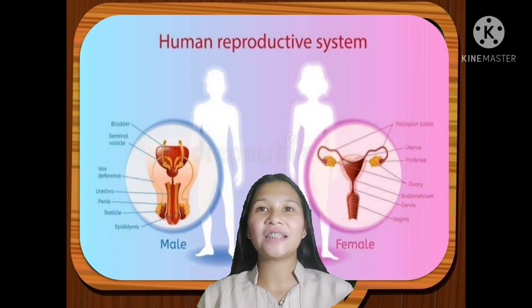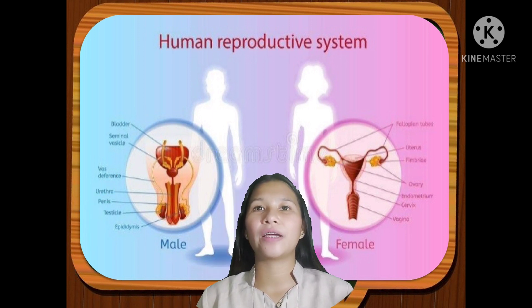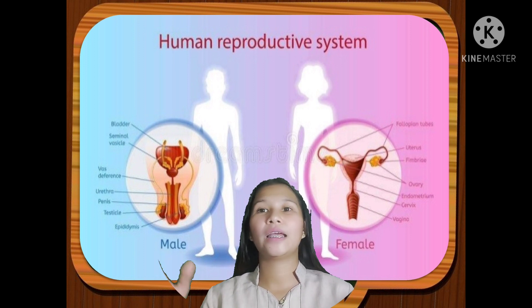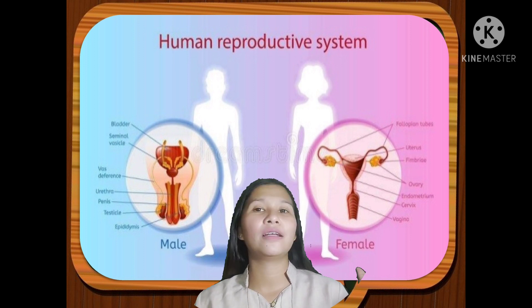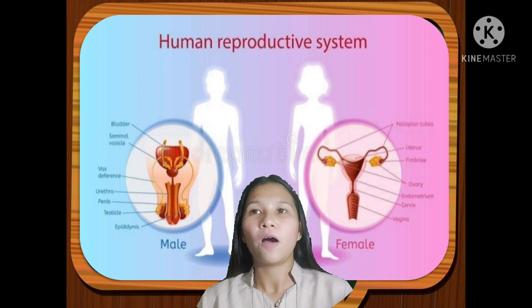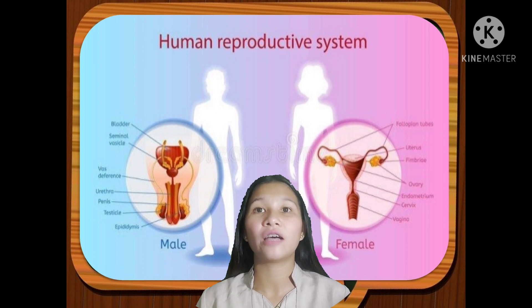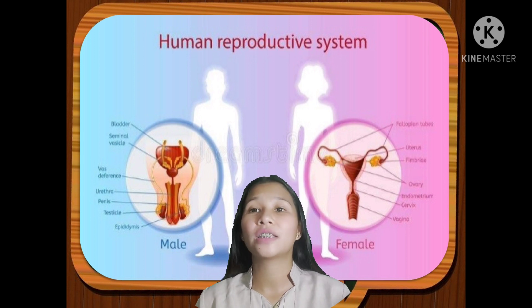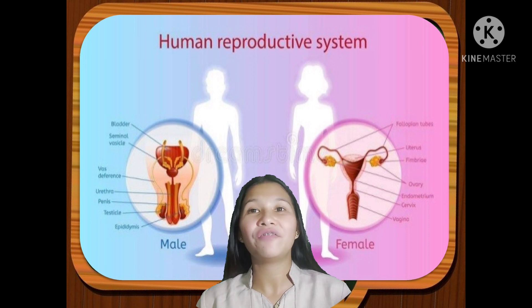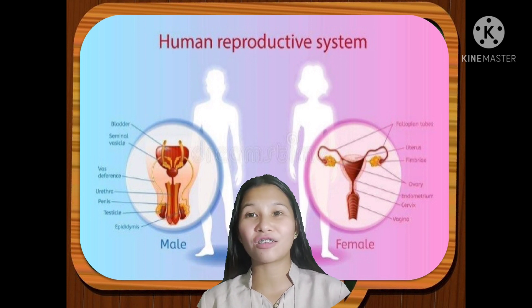There is a striking difference between the male and the female reproductive system, although they also share a number of similarities. Now, let us be familiarized with the different parts of the reproductive system.